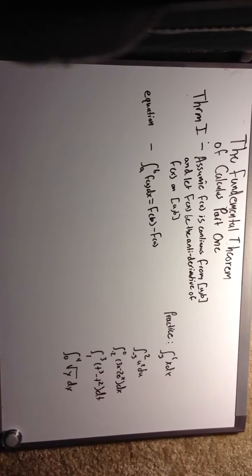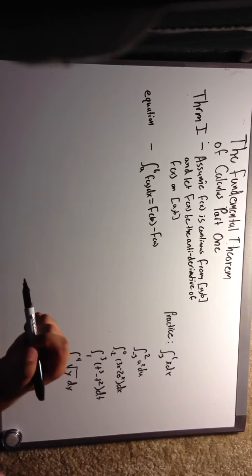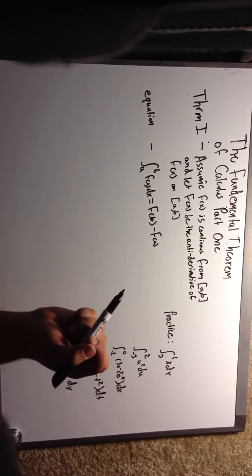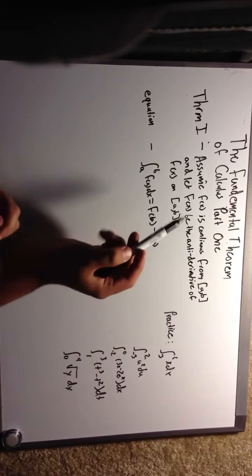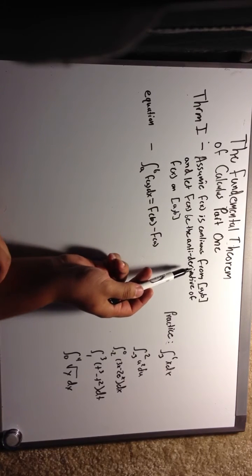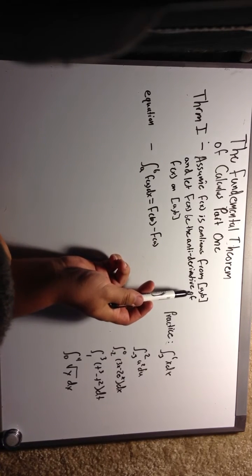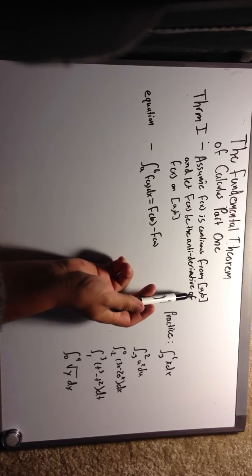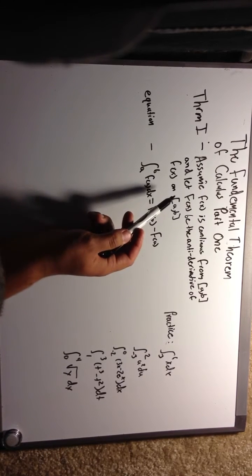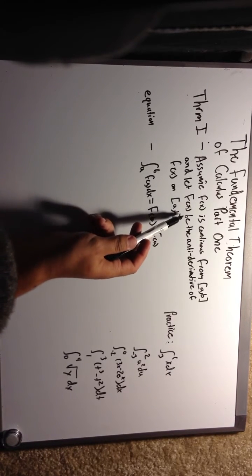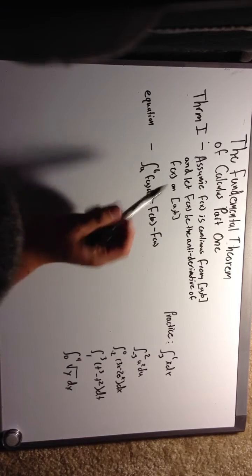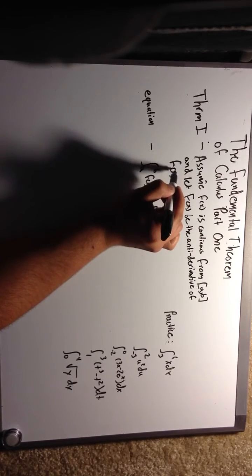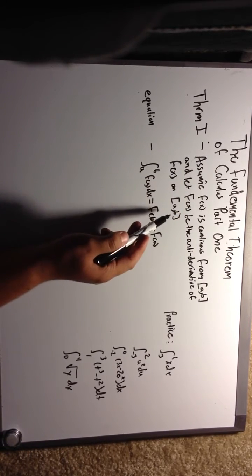Hey guys, so in this video we're going to be going over the Fundamental Theorem of Calculus Part 1. What the Fundamental Theorem of Calculus Part 1 says is: we assume that f of x is continuous from a to b, the closed interval a to b, and we're going to let capital F of x be the anti-derivative of small f of x on the closed interval a to b.